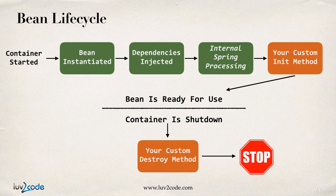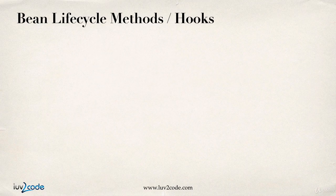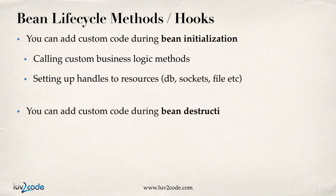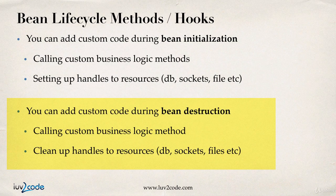The one thing I want to take a look at is those two orange sections here — adding your own custom methods. You can add your own custom code that happens during bean initialization: you can call custom business logic, set up handles, select databases, sockets, or whatever. You can also do a similar thing when the bean is being destroyed, calling custom business methods or cleaning up handles to resources like databases, sockets, or files.